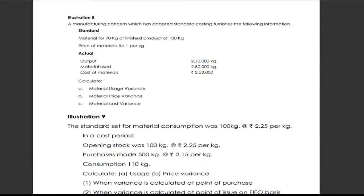Illustration number 8: A manufacturing concern which has adopted standard costing furnishes the following information. Standard material for 170 kg of finished product is 100 kg. Price of materials is rupee 1 per kg, and the actual output is 2,10,000 kgs. Materials used: 2,80,000 kg. Cost of material is 2,50,000 rupees. Required to calculate material usage variance, material price variance, and material cost variance.